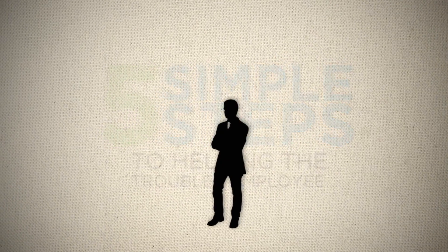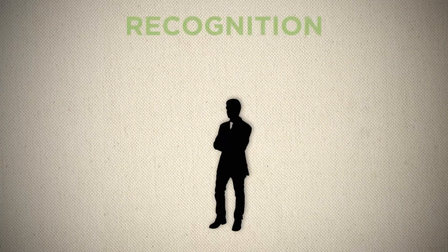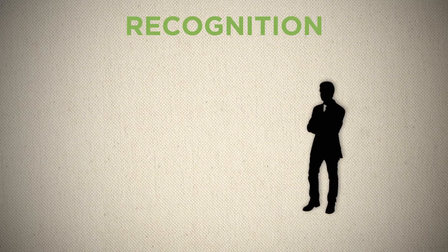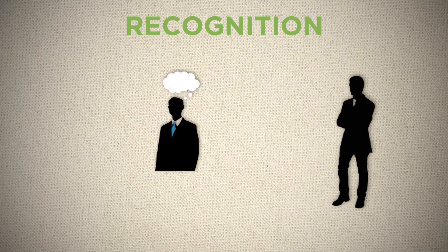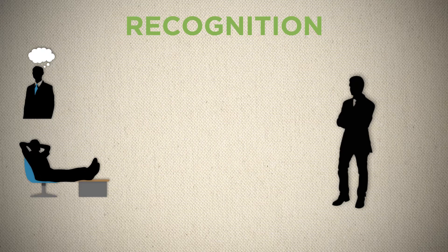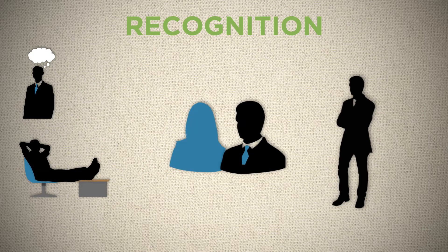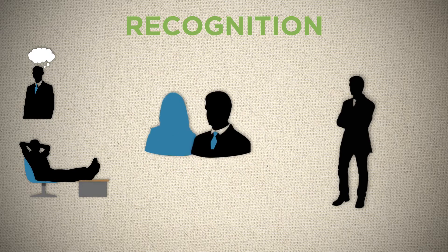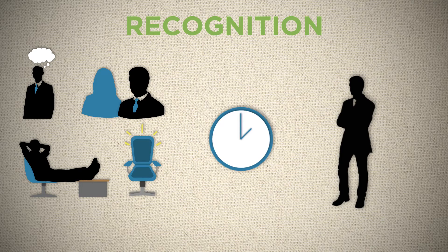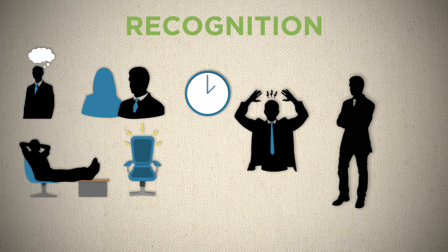Step 1: Recognition. Look to see if an employee is exhibiting a pattern of performance problems, like an inability to focus, a waning work ethic, failure to get along with coworkers, absenteeism, procrastination, or mood swings.